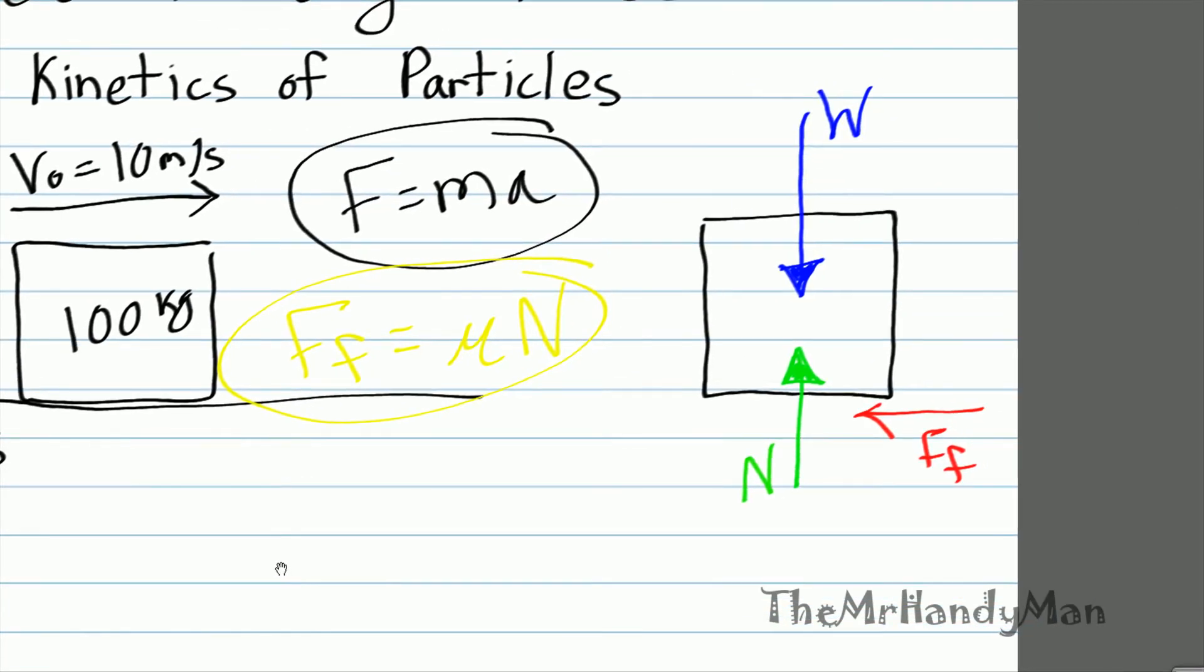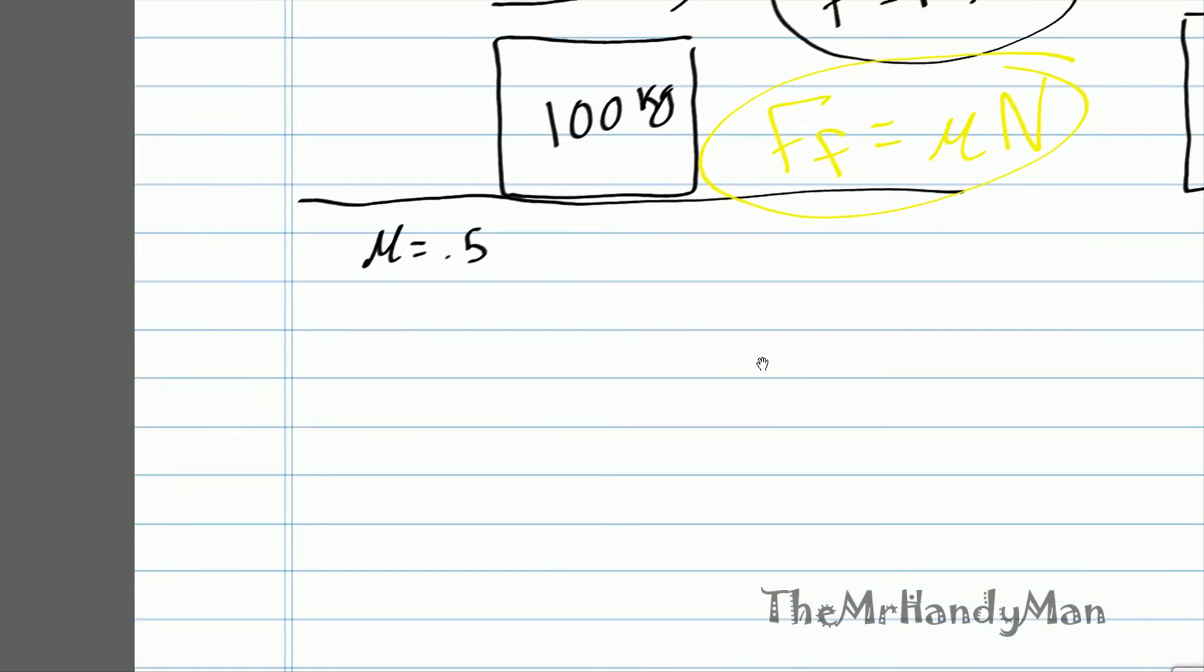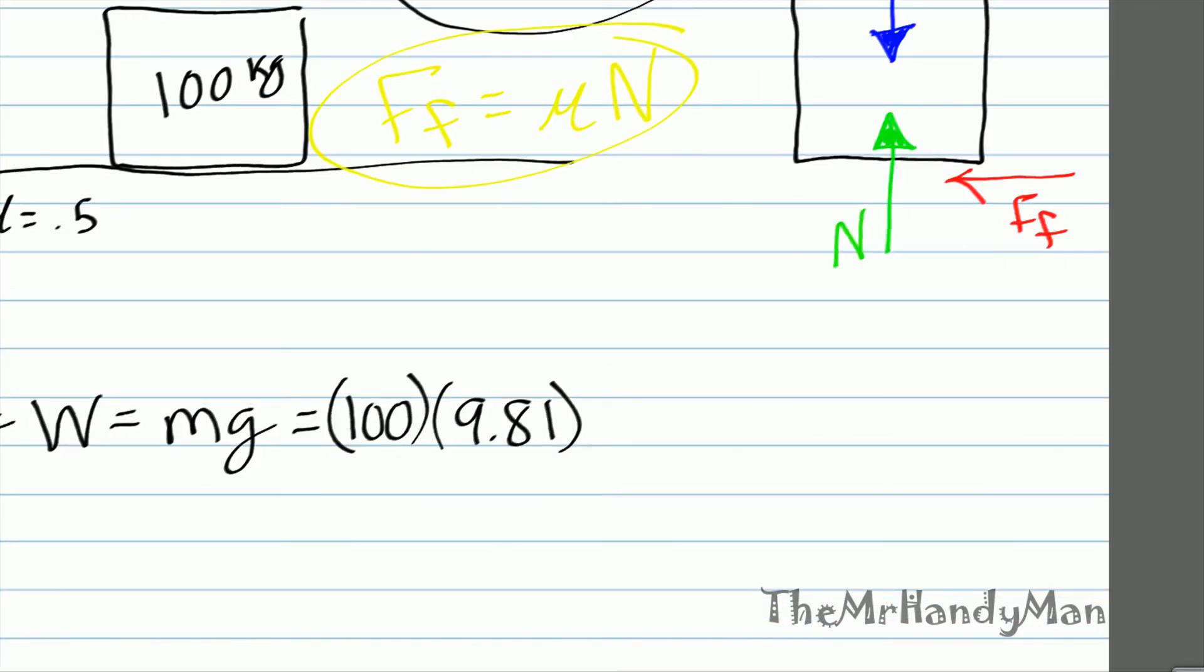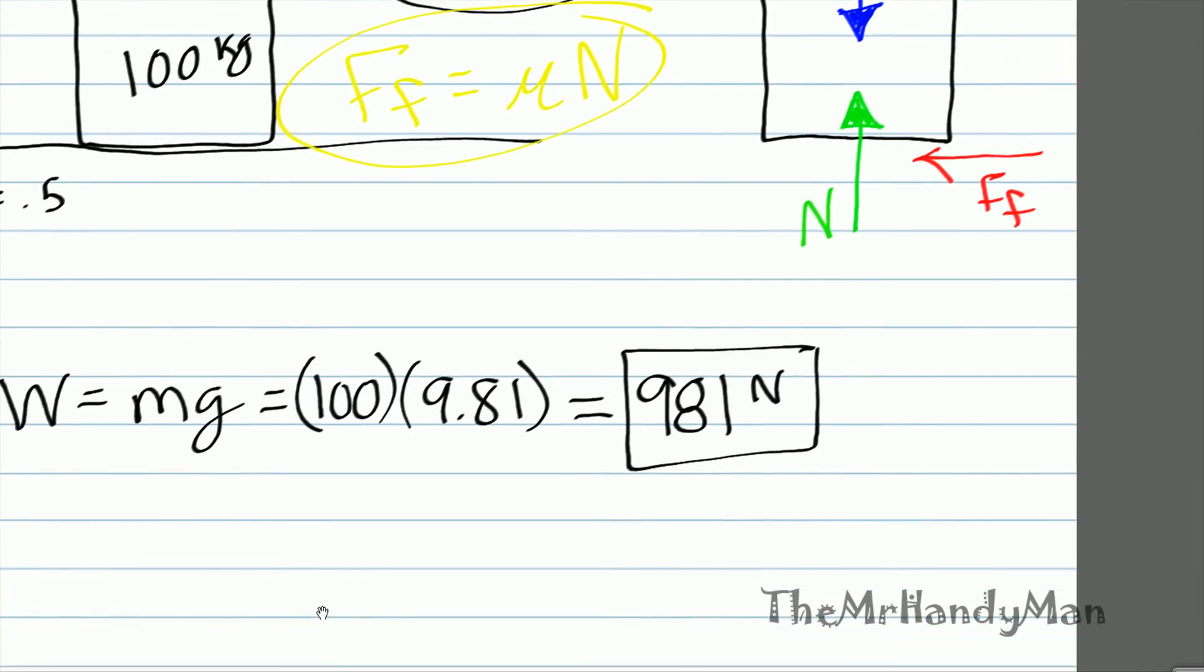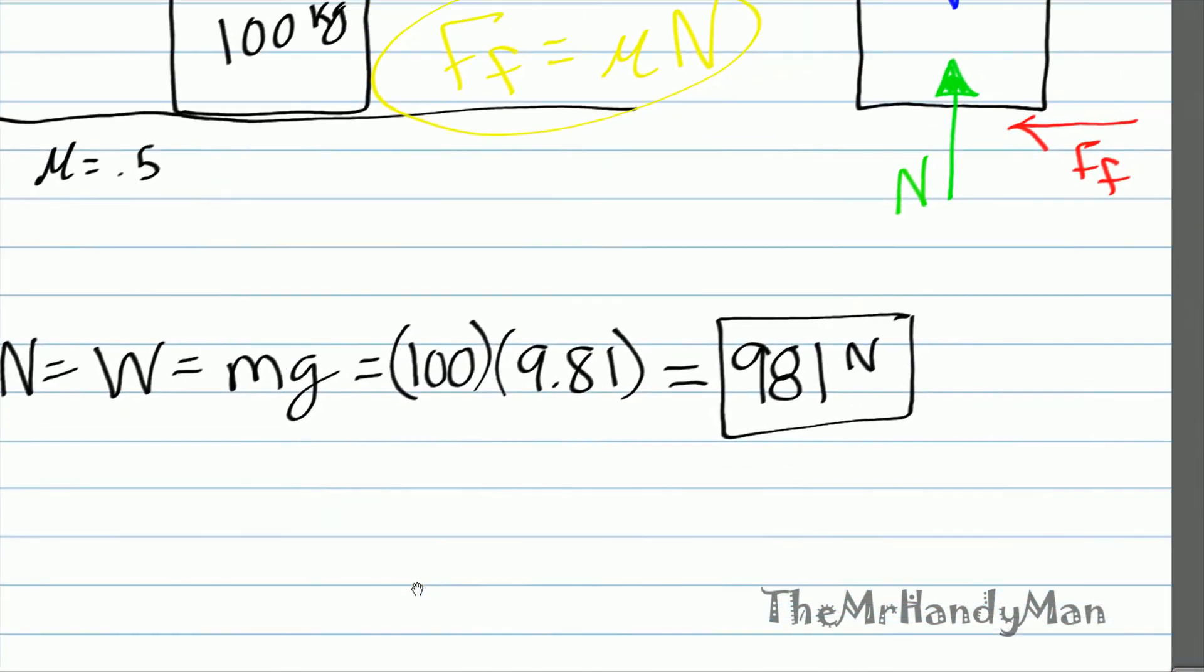First thing we're going to do is solve for the normal force. So we know that the normal force is equal to the weight, which is equal to mg, which is equal to 100 kg multiplied by the gravity, 9.81, which equals 981 newtons. Let's box that.